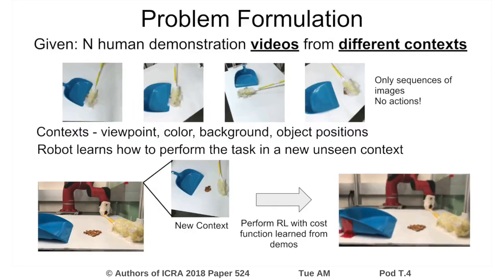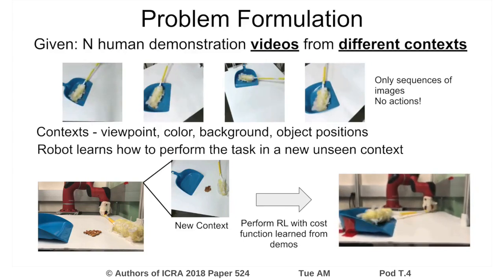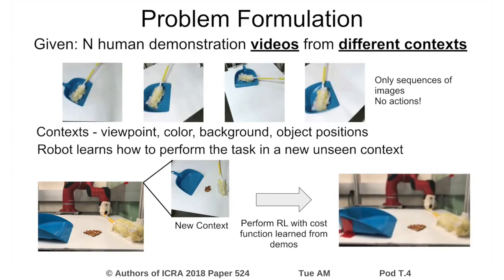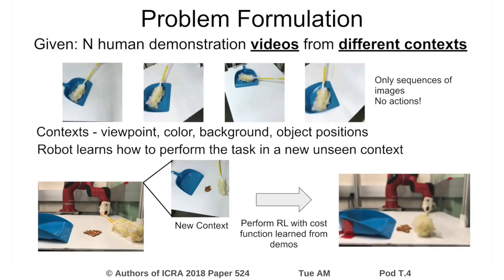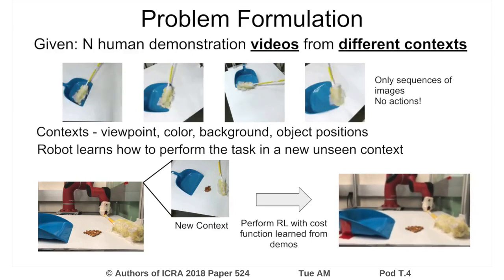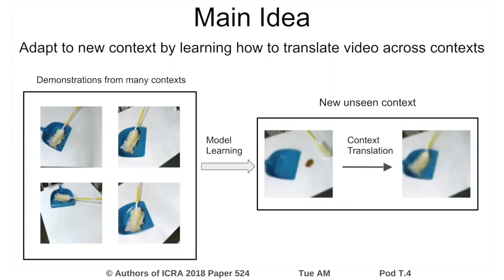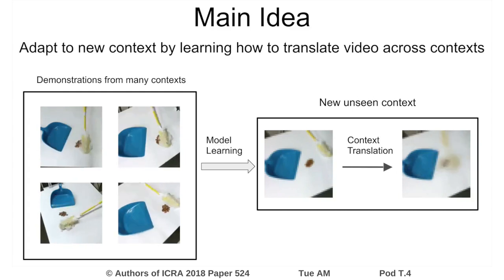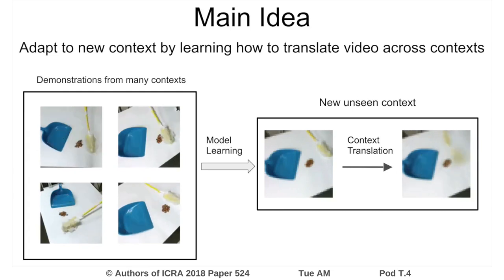In our problem, we consider a number of human demonstration videos collected from variations in the environment, which we call contexts. These contexts can include changes in viewpoint, appearance, and object positions, among others. At learning time, the robot is presented with a new context and must learn to perform the task in this environment. The main idea in our approach is to use the provided demonstration videos to learn a model that can translate videos across contexts, and then use this model to predict expert behavior in new contexts.